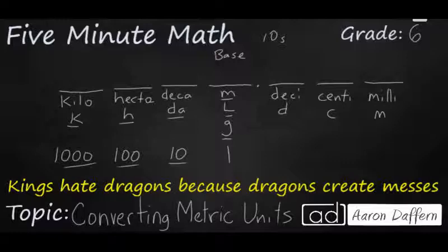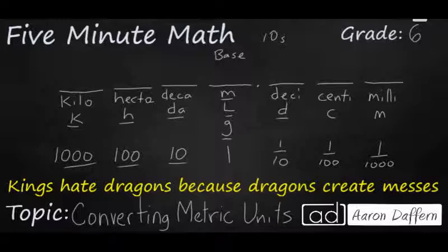On the other side of the decimal, if values get smaller, we have deci for one-tenth, then centi — as in centimeter or centigram — which means one-hundredth because it's in the hundredths place. And then milli, like millimeter, is one-thousandth. It takes one thousand millimeters to make one meter. So the metric system ranges from kilo — a thousand — all the way down to milli — one-thousandth.